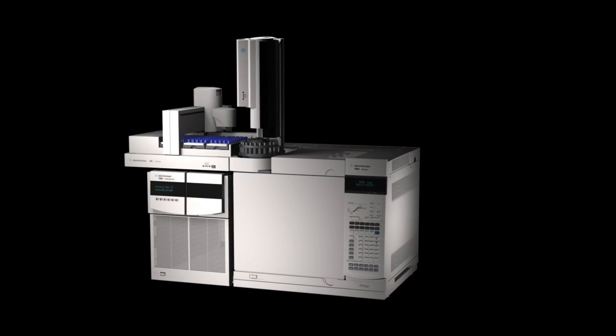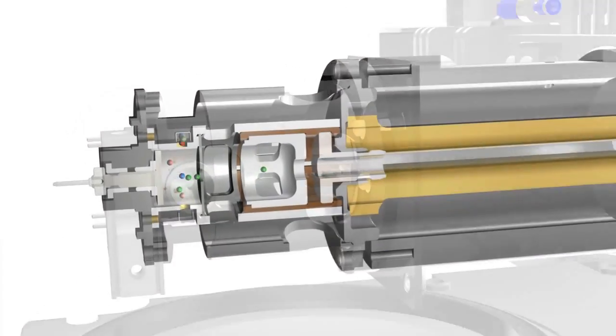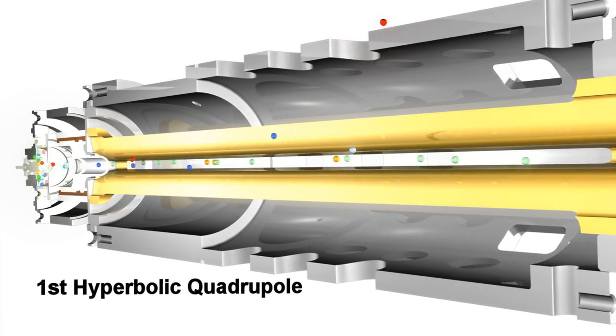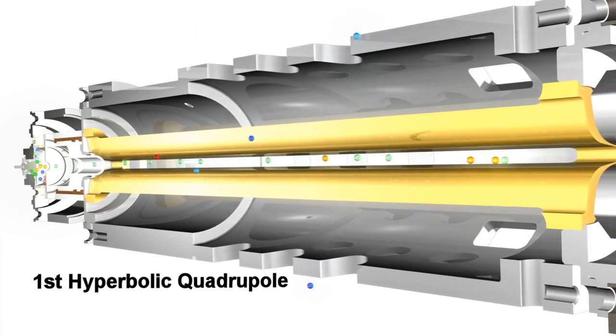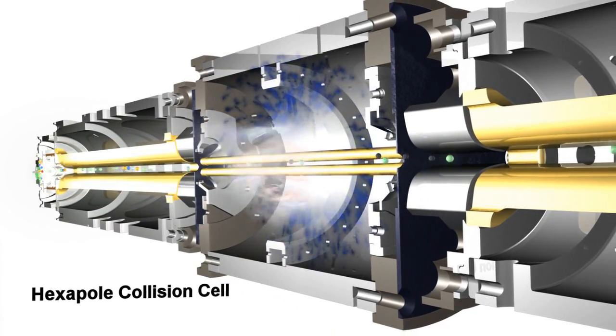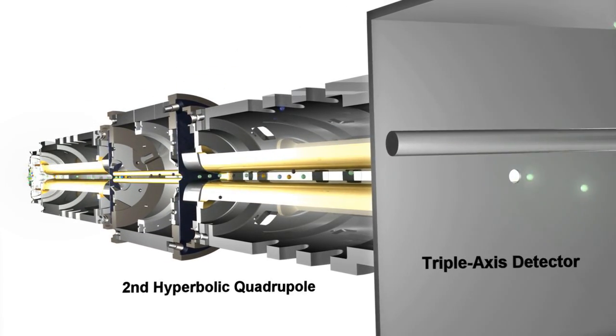The typical MS-MS description focuses on the extraction of ions from the source, isolation of the precursor ion in the first quadrupole, dissociation of precursor ion in collision cell, and mass filtering of the product ions in the second quadrupole before detection.